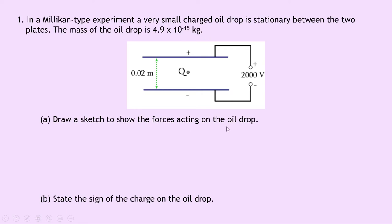Part A says to draw a sketch to show the forces acting on the oil drop. Well if this is my oil drop here, then we have two balanced vertical forces which cause the oil drop to be stationary, where the downwards force is due to the gravitational field, so that's f equals mg or the weight, and the upward force is due to the electric field which we can call f equals QE.